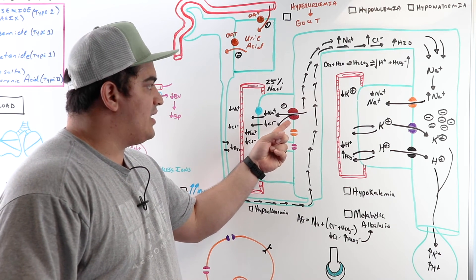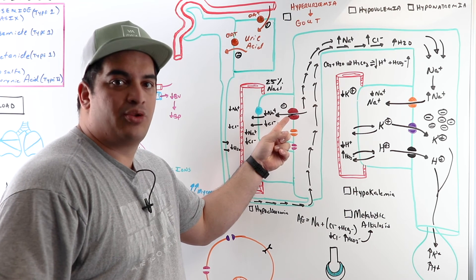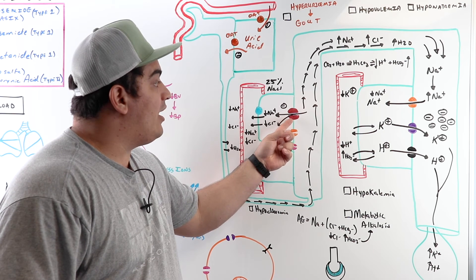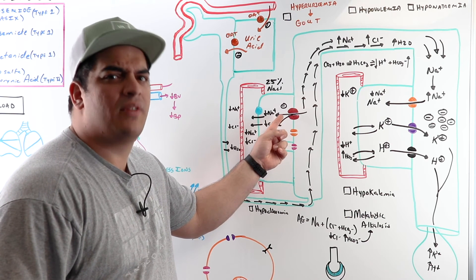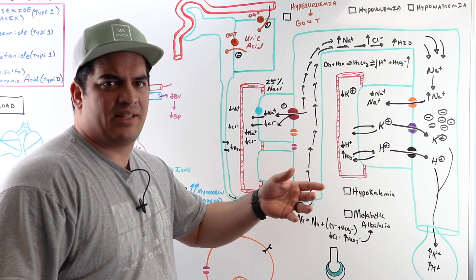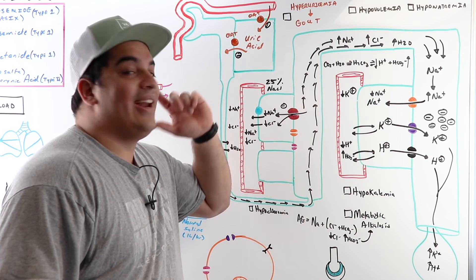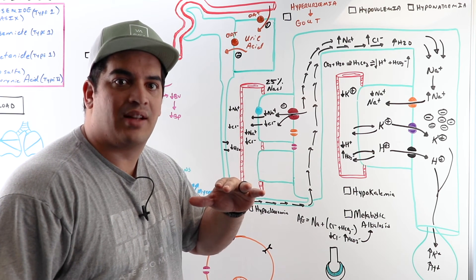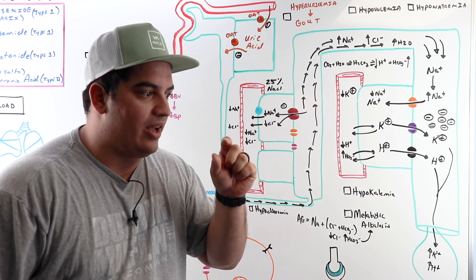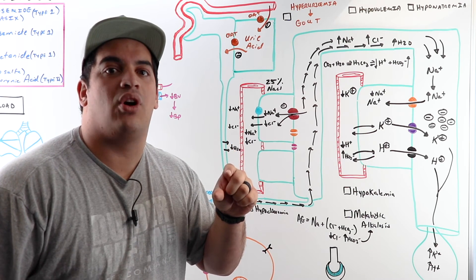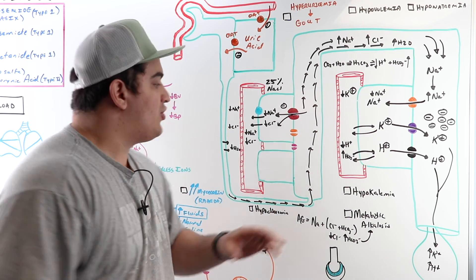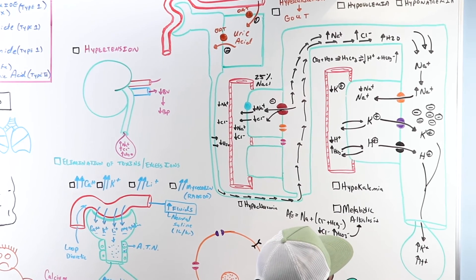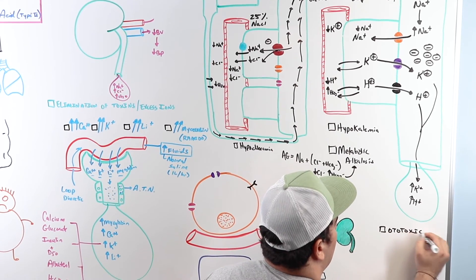The sodium-potassium-2-chloride co-transporter is also present in the inner ear. At higher concentrations of loop diuretics, or when kidney failure prevents adequate drug clearance, the loop diuretic affects these inner ear transporters. This can decrease endolymph concentration and damage hair cells in the inner ear, causing an ototoxic effect.